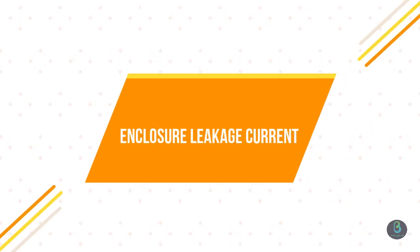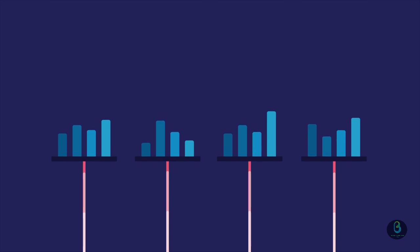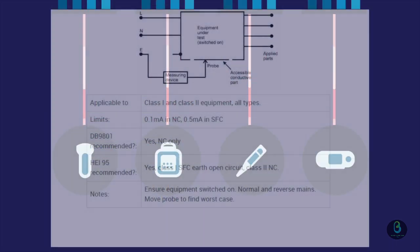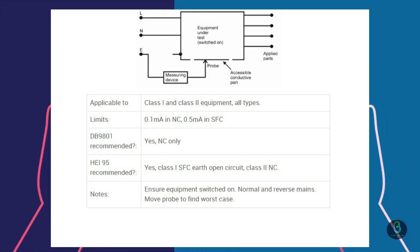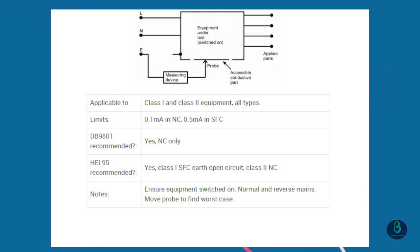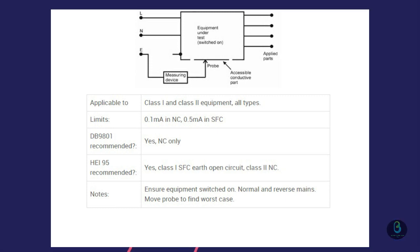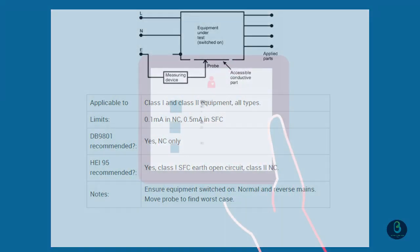Enclosure leakage current is measured between an exposed part of the equipment, which is not intended to be protectively earthed, and true earth. The test is applicable to both Class 1 and Class 2 equipment, and should be performed with mains polarity both normal and reversed.